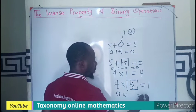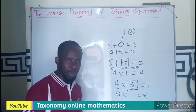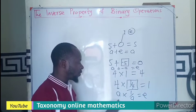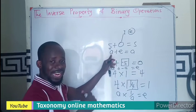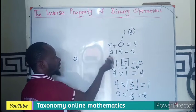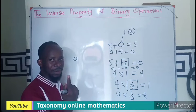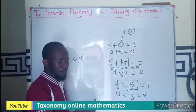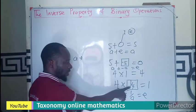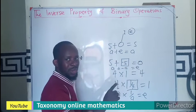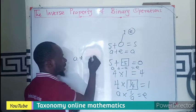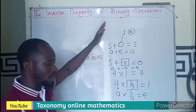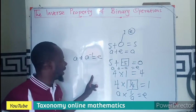For multiplication: a times some value gives one, and one is the identity element. So representing any number with a, since we are using a binary operation we use the star operator. A operated on by its inverse should give the identity element. You can see: negative five is the inverse for addition, and one over four is the inverse for multiplication — in both cases we always get back our identity element.